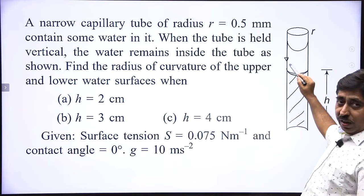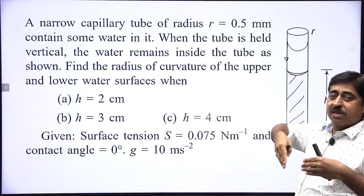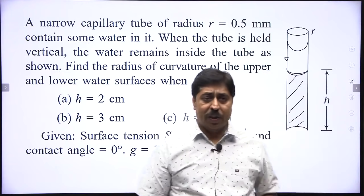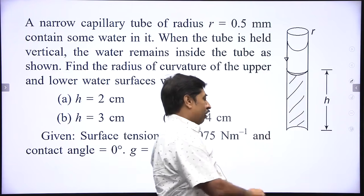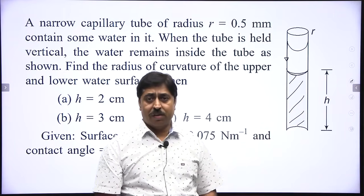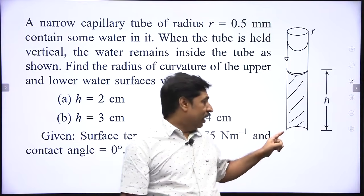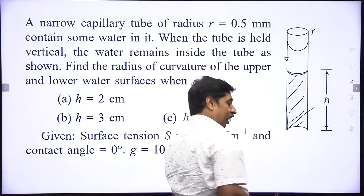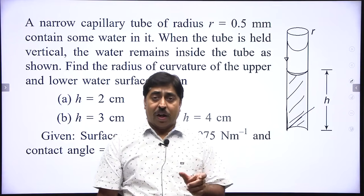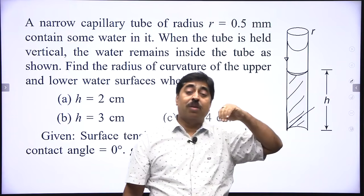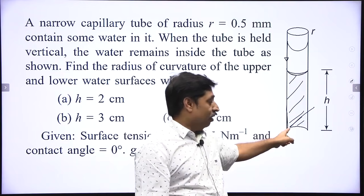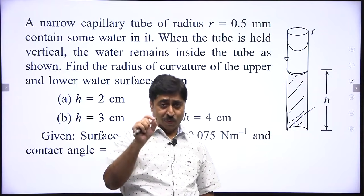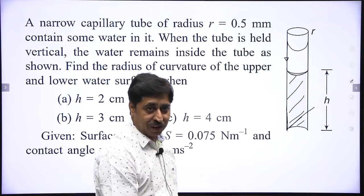When you see a picture like this — where the tube wall is extending well above the liquid surface — the contact angle will be 0 degrees. But this will not be the case at the lower end, because there the solid surface is not extending well beyond the liquid surface. In such a case, the contact angle has no meaning. The tangent on the liquid and tangent on the solid may not have exactly 0 degrees between them. The contact angle term is meaningful only when the solid surface extends well beyond the liquid surface.